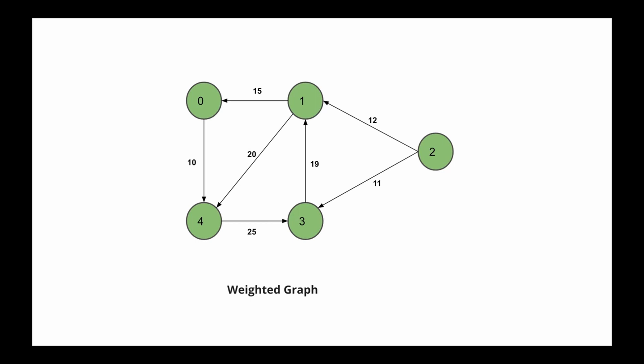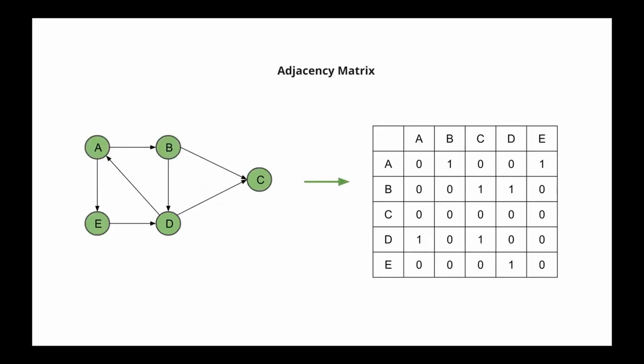Now let's talk about how we can represent these graphs in code. We can represent a graph in an adjacency matrix or an adjacency list. In an adjacency matrix, we create an N by N matrix, where N is the number of nodes present in the graph. Both the columns and rows in the matrix represent the nodes in the graph. Our graph has nodes A, B, C, D, and E, which are represented in both the rows and columns. To fill up the adjacency matrix, if there is an edge between two nodes, we store the value 1. If there is no edge between two nodes, we store the value 0.